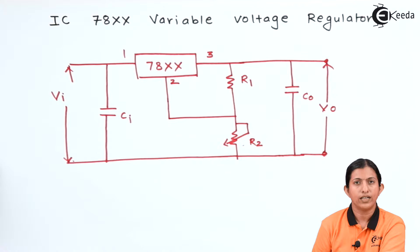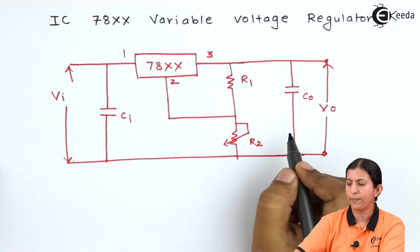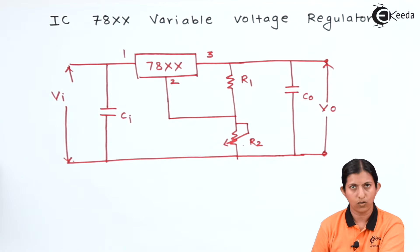Whenever we use IC78XX as a fixed voltage regulator, we connect pin number 2 to the ground. There is one capacitor connected at the input side and one capacitor connected at the output side.